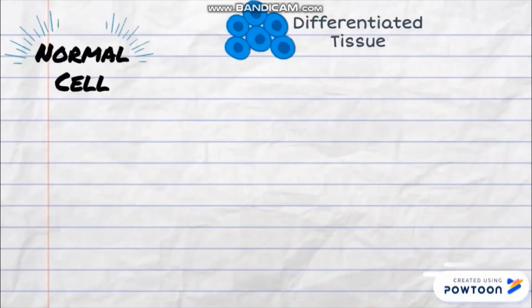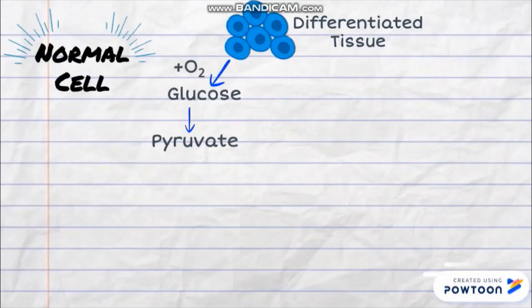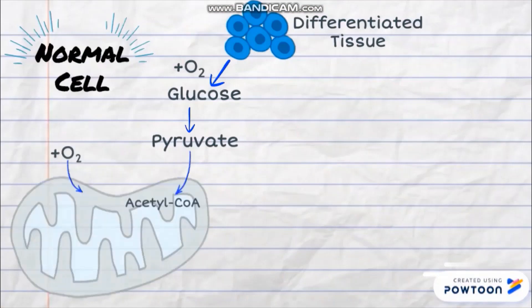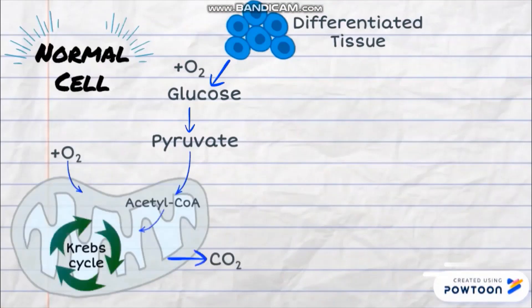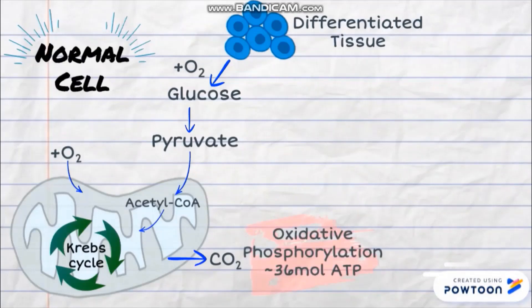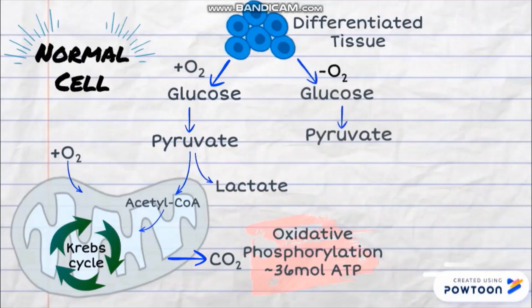In normal cells, glucose is converted to pyruvate by a process called glycolysis. In the presence of oxygen, the pyruvate will generate 36 moles of ATP in the mitochondria through oxidative phosphorylation. Some pyruvate will also convert to lactate, but the amount produced is insignificant.